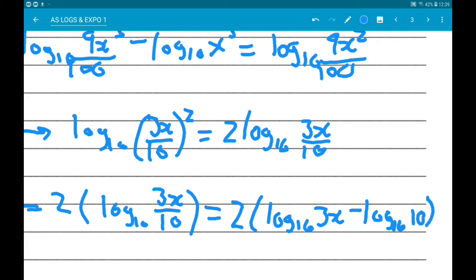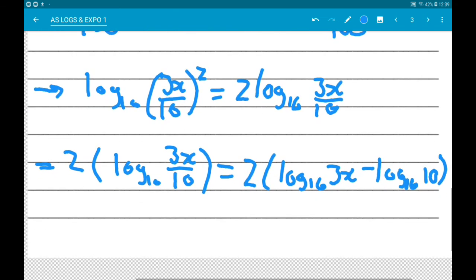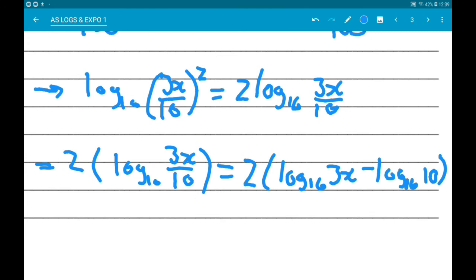Now, log base 10 of 10 is just asking what power do we need to set 10 the base to, to get 10. So log base 10 of 10 is 1. So now, finally, we do have 2 lots of minus 1 add log of 3x.